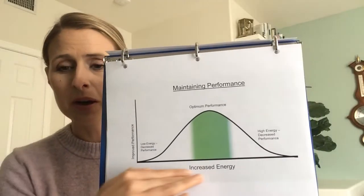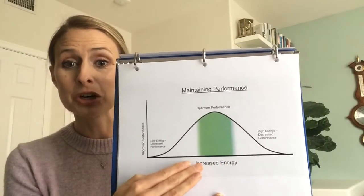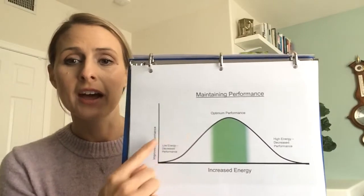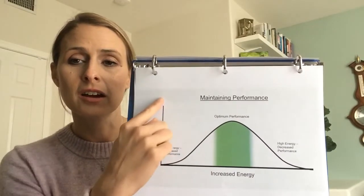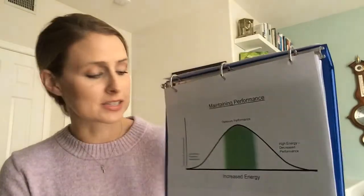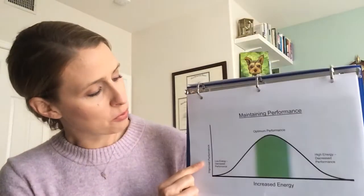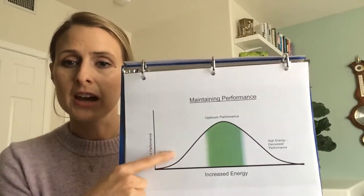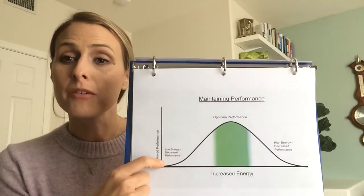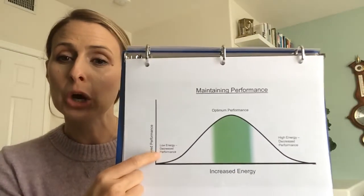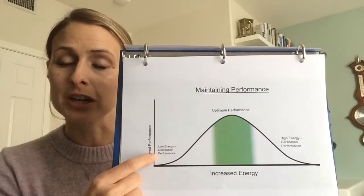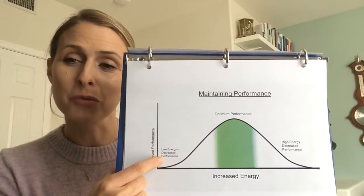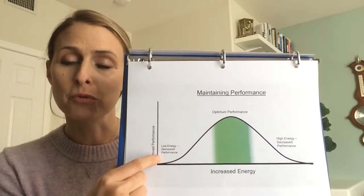The bottom axis here is increased energy and the other axis here is improved performance. On this side, I have really low energy, low stress symptoms, and really low performance.